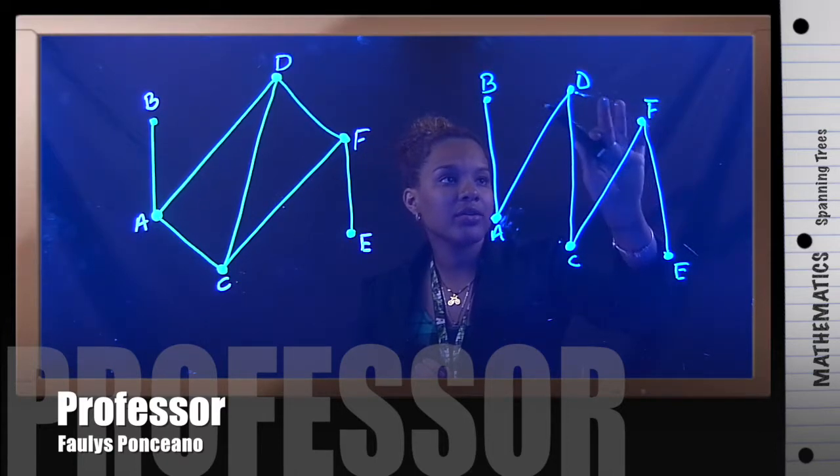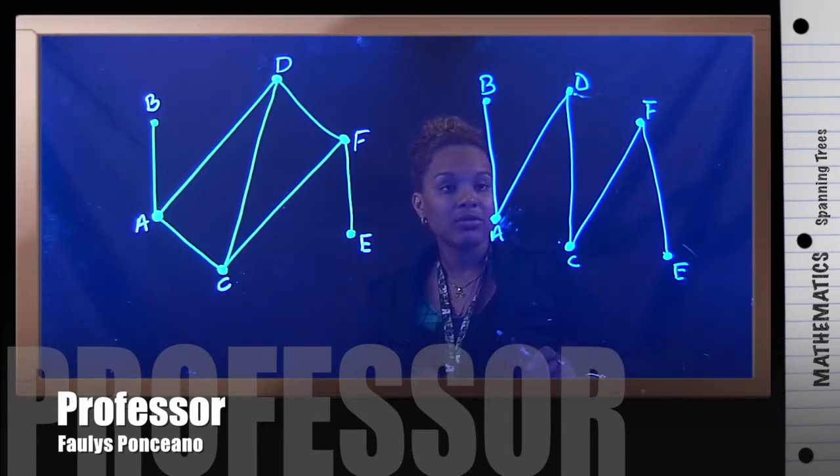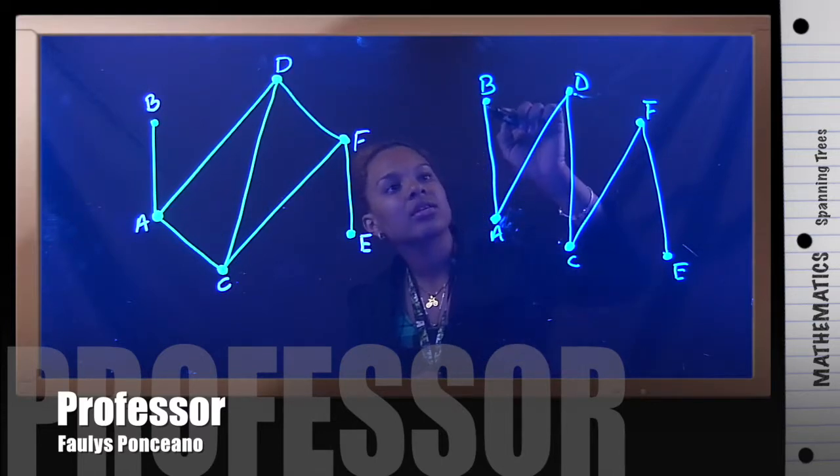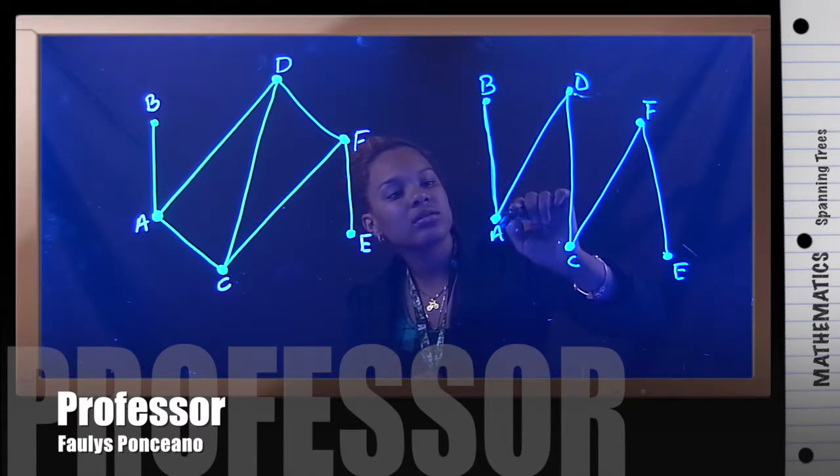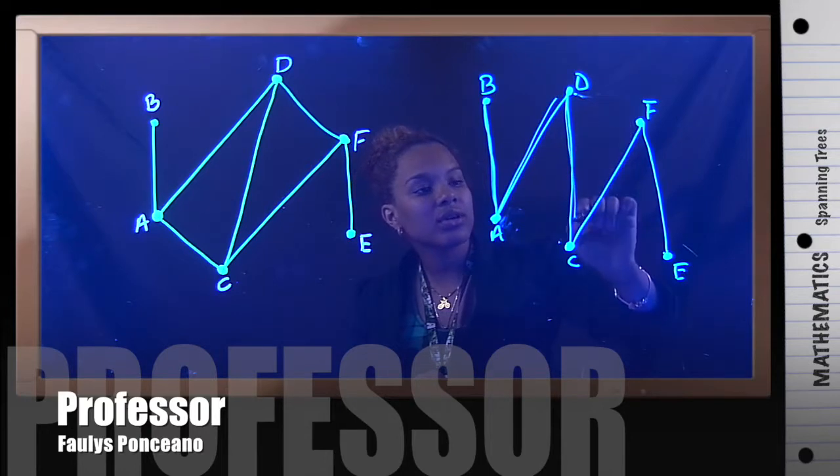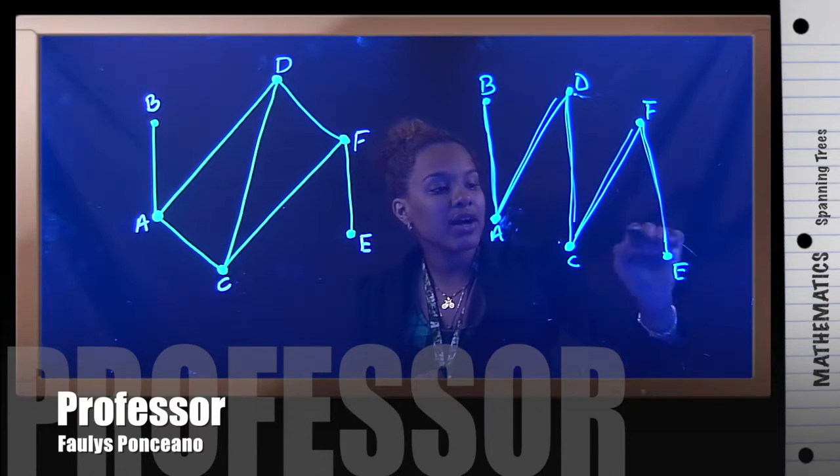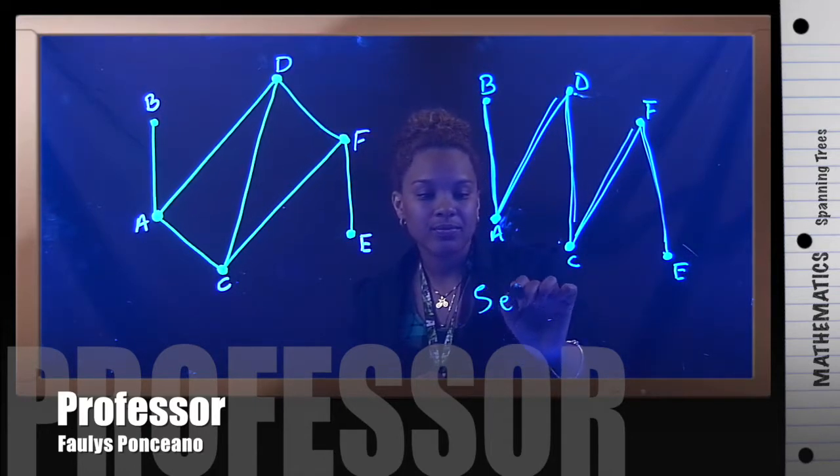So now if I look at my graph, I have no circuits. I have one, two, three, four, five edges. Right?